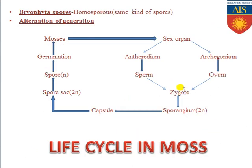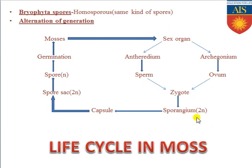The zygote develops into sporangium (2N, diploid), which produces a capsule, which produces the spore sac (2N), which produces spores by meiosis — becoming haploid. The spore germinates to form mosses again. Mosses, antheridium, and archegonium are haploid; when sporangium forms, the diploid number returns. This alternation between gametophytic and sporophytic generation is called alternation of generation.